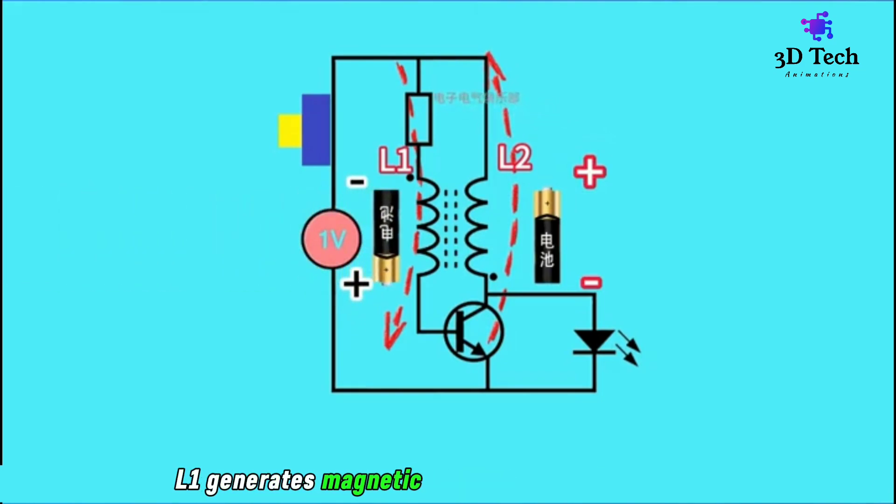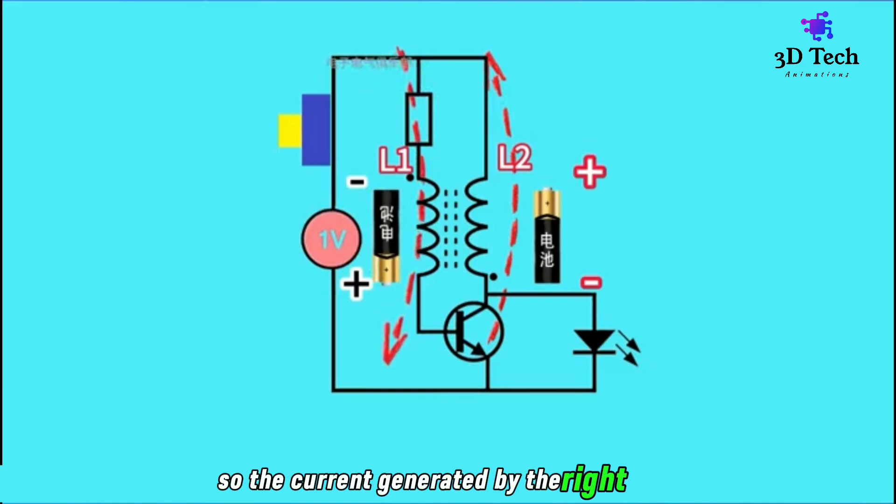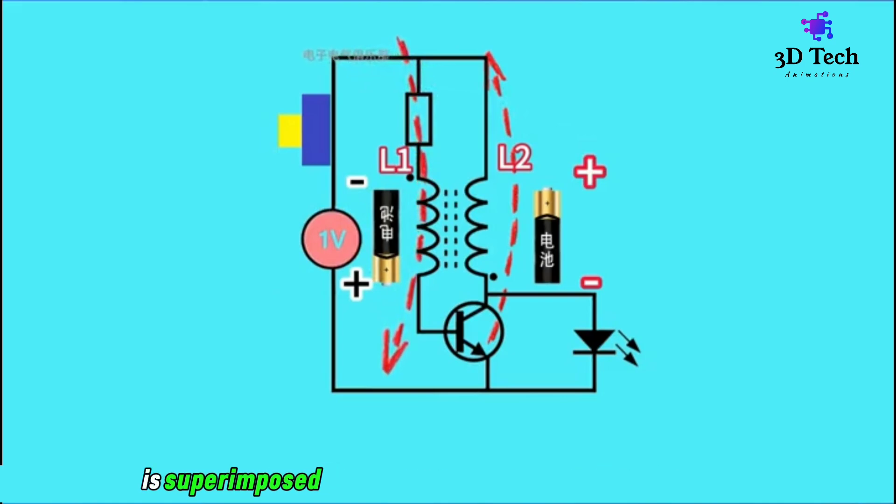At this time, L1 generates magnetic flux to oppose L2, producing a bottom positive, top negative induced voltage. The current generated by this is superimposed on the current generated by the battery.